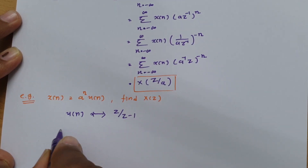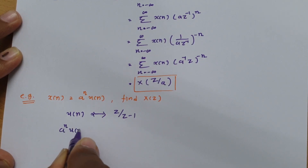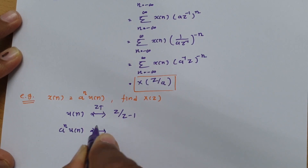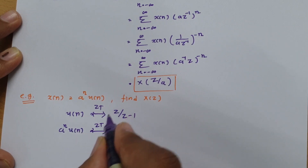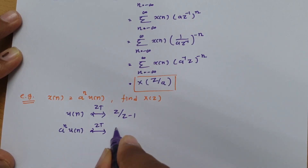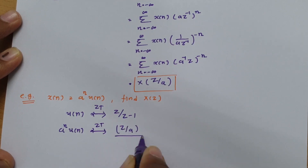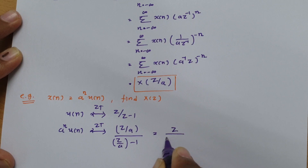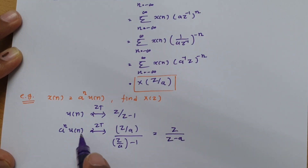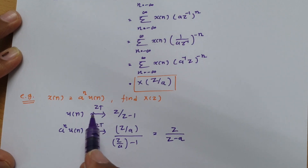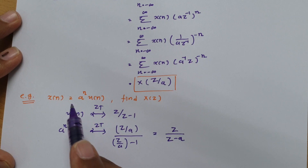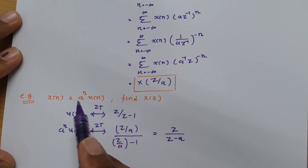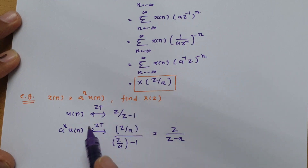So what will be the Z transform of A to the power n times U of n? Using the scaling property, we replace Z with Z divided by A. So we get Z divided by A, over Z divided by A minus 1, which simplifies to Z divided by Z minus A. We already know that the Z transform of A to the power n times U of n is Z divided by Z minus A. By using this scaling property, we can easily solve this problem directly in an easier way.